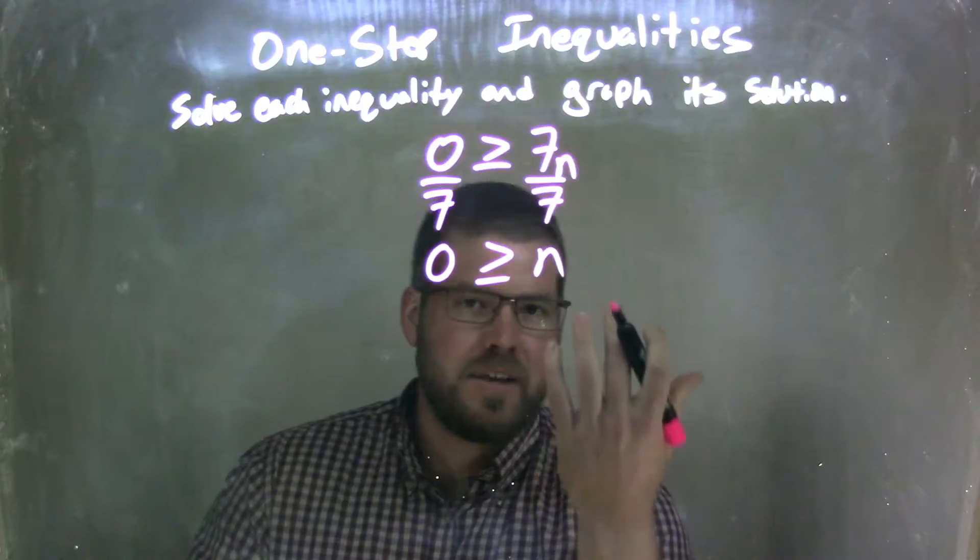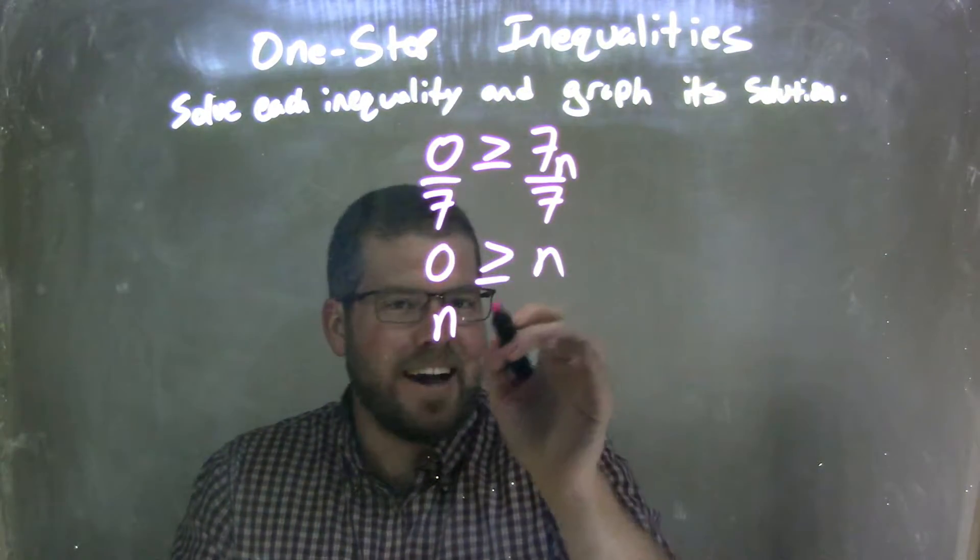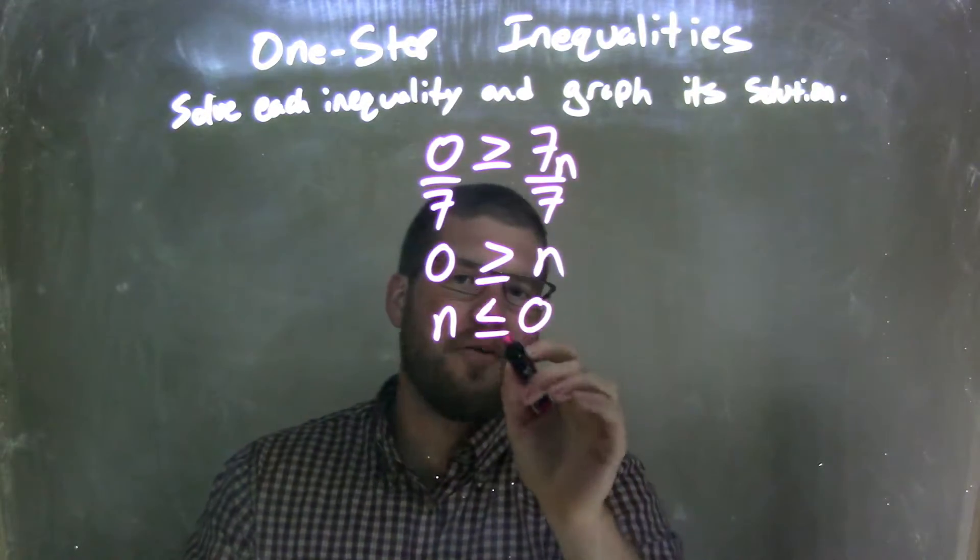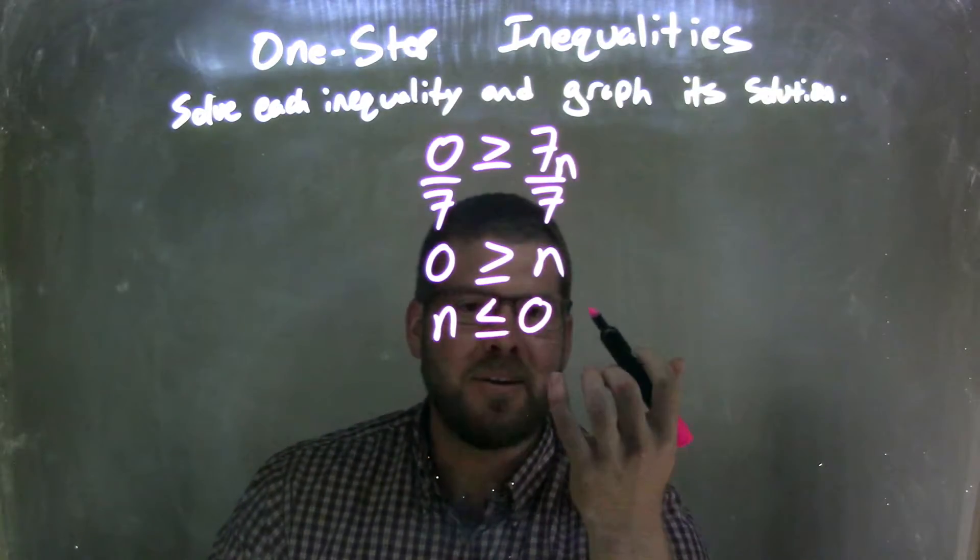Well, if I rewrite this to have n come first, write the n over there, the pointy side is still close to the n, and it's still equal to, and the 0 is opened by the open mouth. So my greater than side turns into a less than side, you can't flip the side when you do that.